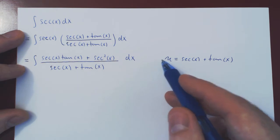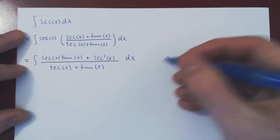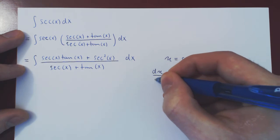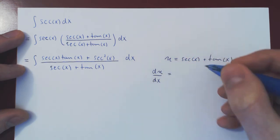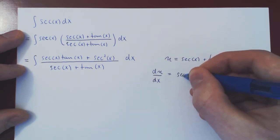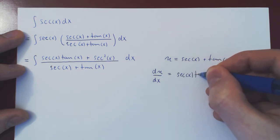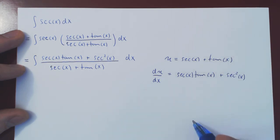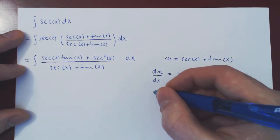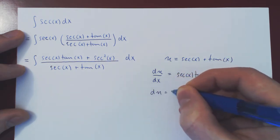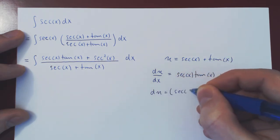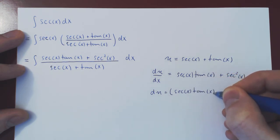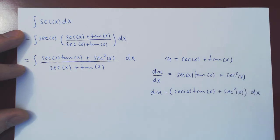To have our dx as a function of du, we must differentiate u with respect to x. As we have just said, the derivative of secant is secant of x tan of x, plus the derivative of tangent, which is secant squared of x. Well, multiply across by dx, and you'll have that du is secant of x tan of x, plus secant squared of x times dx.